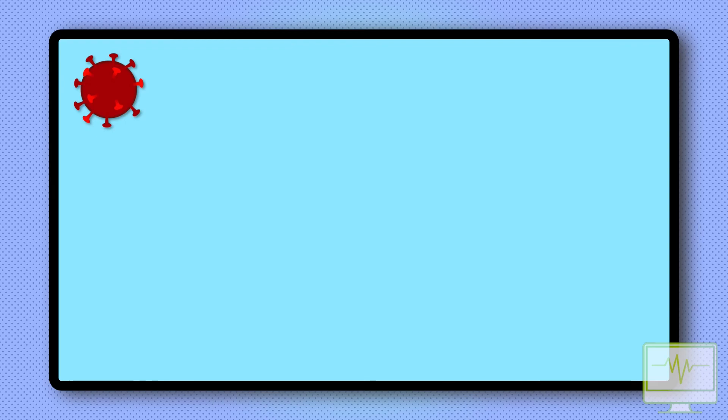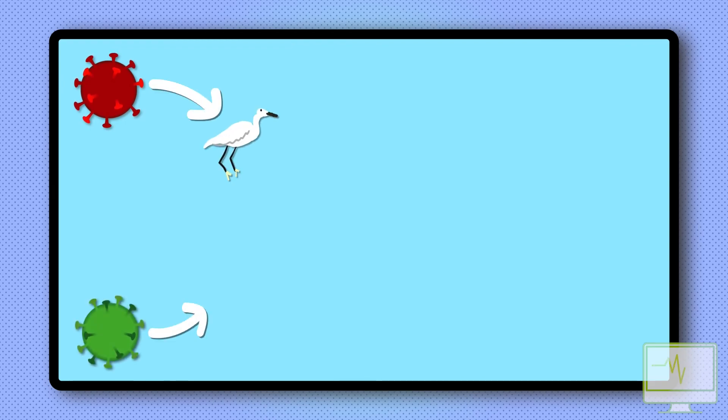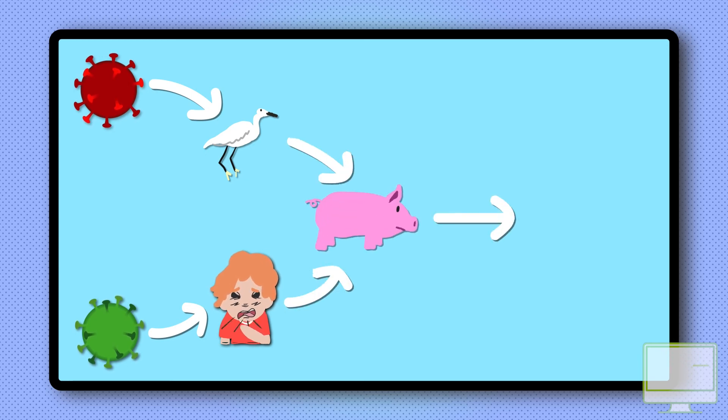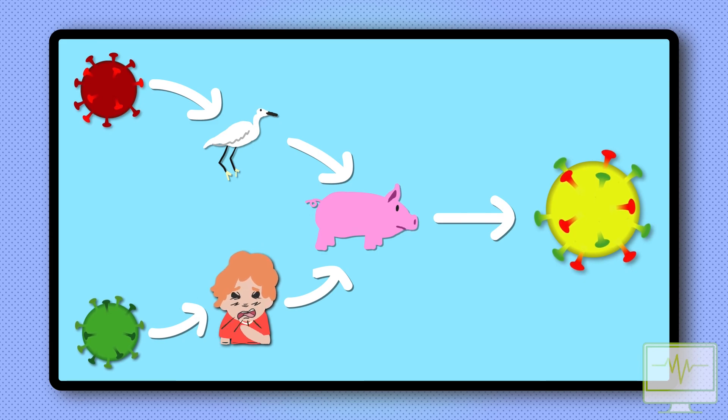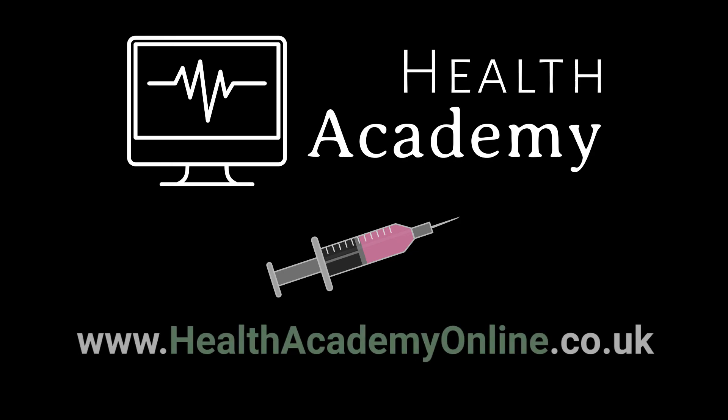However, antigenic shift is a real risk. A major change of the virus in an animal population can produce a new virus strain which could infect humans. With no immunity to this new virus in the human population, this could lead to a significant pandemic. Research is currently prioritizing work on a universal influenza vaccine to address this risk.